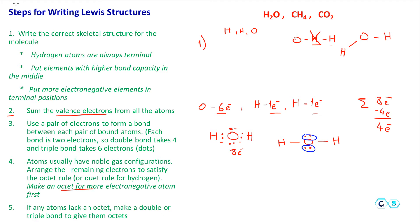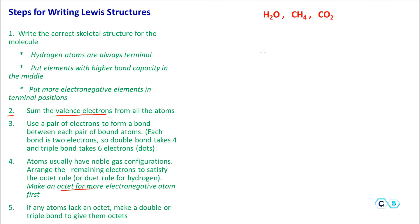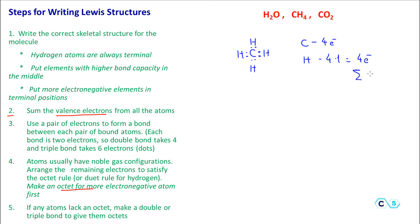Now let's go to the second molecule, CH₄. Carbon goes in the middle because hydrogens go to terminal positions. We have four hydrogens, and each hydrogen uses two electrons to bond with carbon. The total number of electrons: carbon is group four with four electrons, and four hydrogens contribute four electrons (4 × 1), giving eight total. We made four bonds using two electrons each — all eight electrons are used. No electrons remain, carbon has an octet, and this is the Lewis structure of methane.